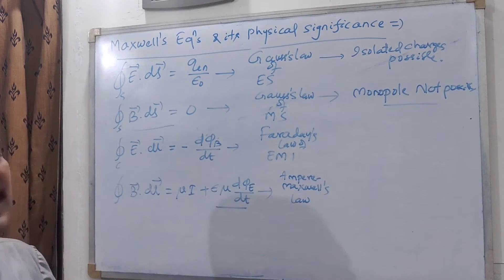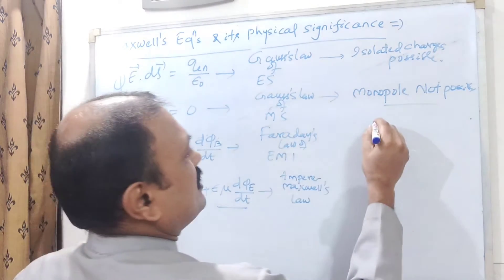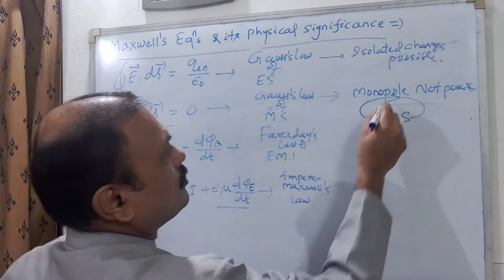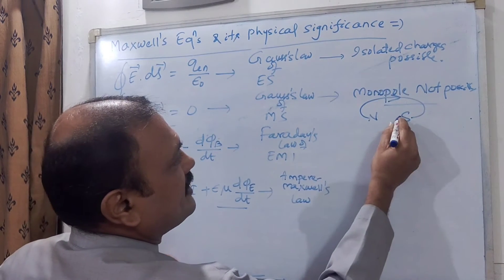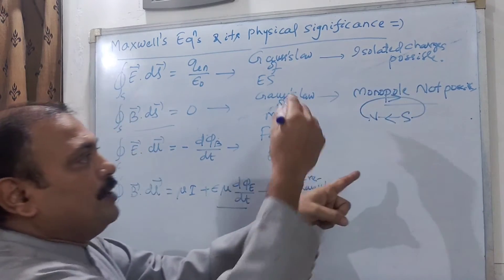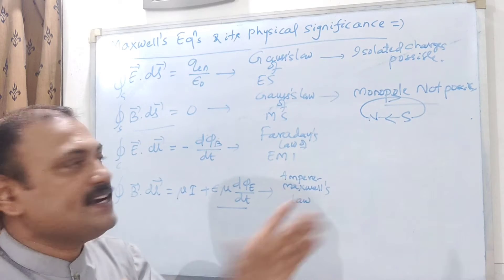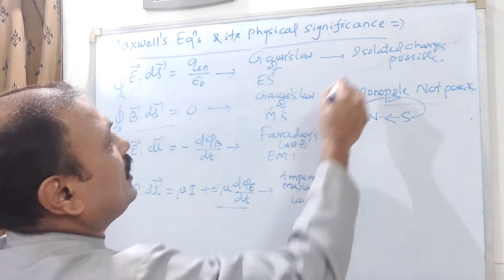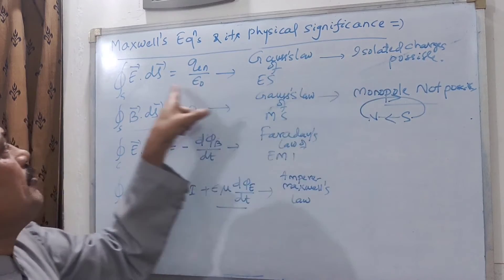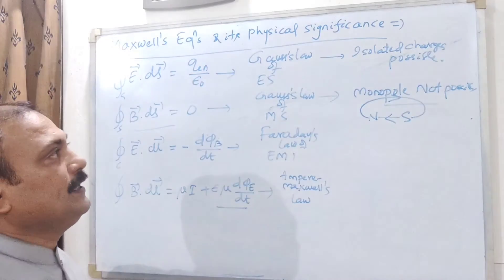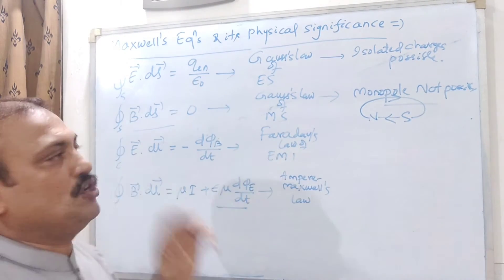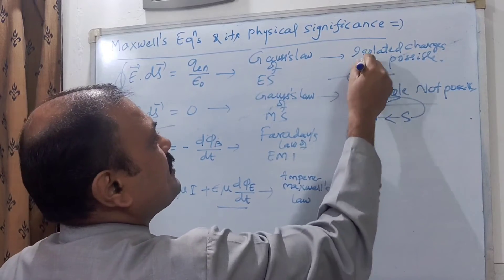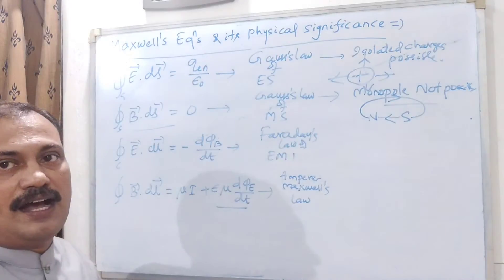More importantly, the magnetic lines of force are continuous. If you have a north pole here and south pole here, the lines of force starting from the north pole terminate at the south pole, and inside the magnet they go from south to north. Therefore, magnetic lines of force are continuous — you cannot separate the north pole from the south pole, confirming that magnetic monopoles are not possible.